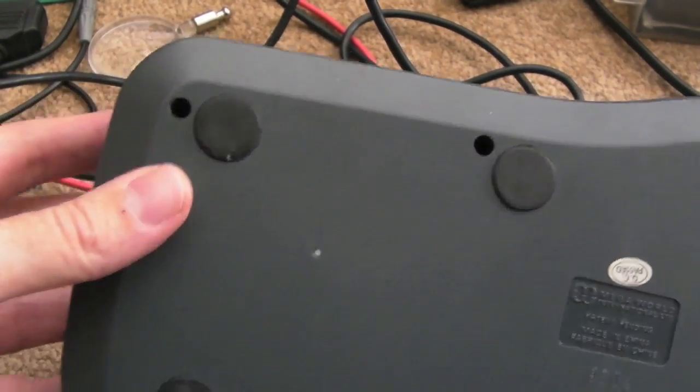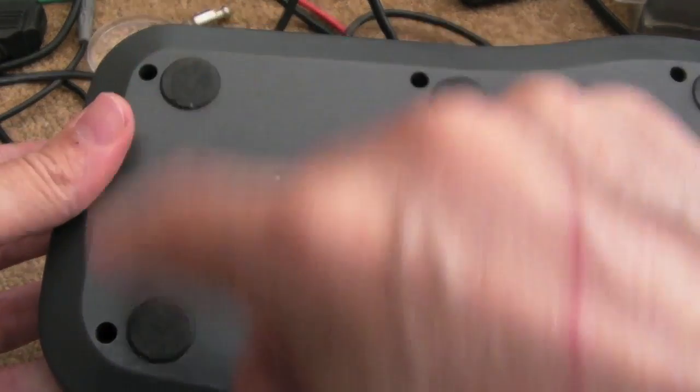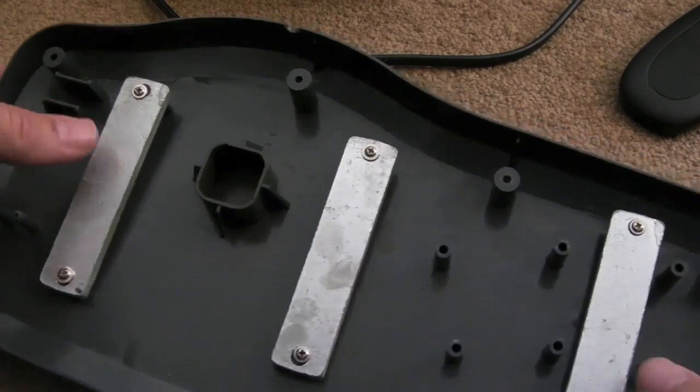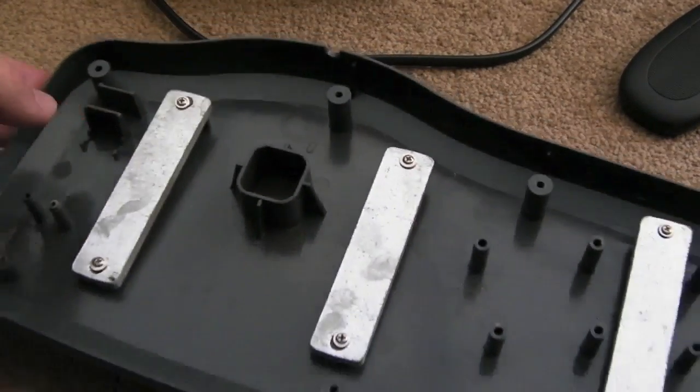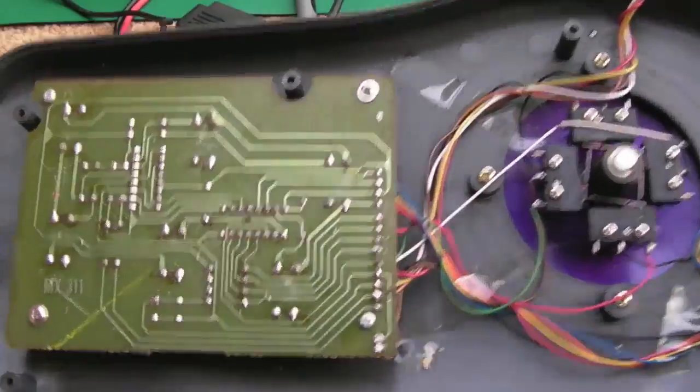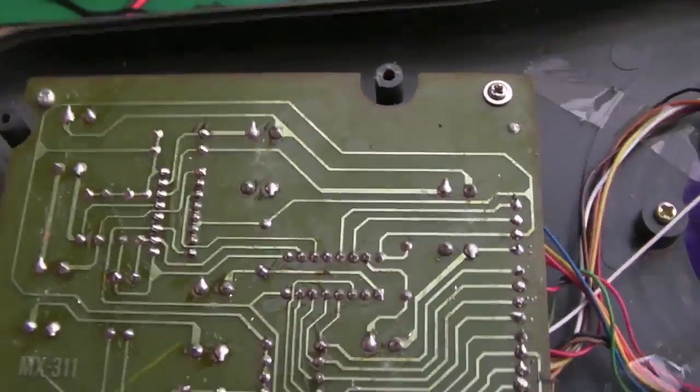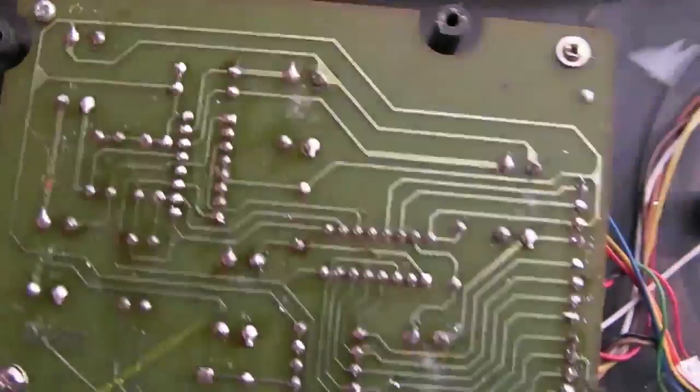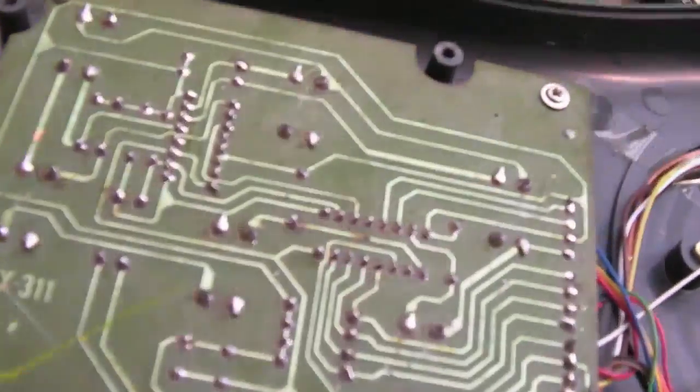So on these SATEC ones all the screws are visible on the back, there's none under the feet and stuff like there was on that first one. Yeah so they've got three weights in the base of these ones which give it a nice weighty feel. So looking at the assembly here you can see, yeah, the board's a bit messy there, it needs cleaning up with some isopropyl certainly.